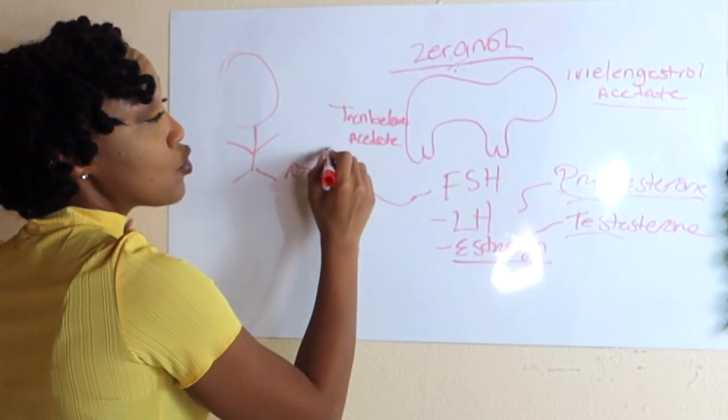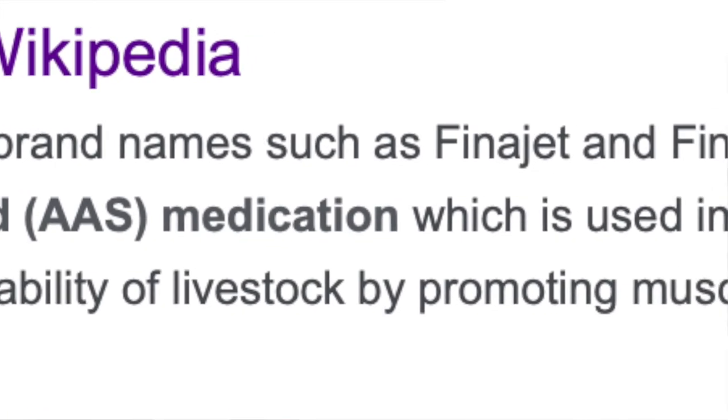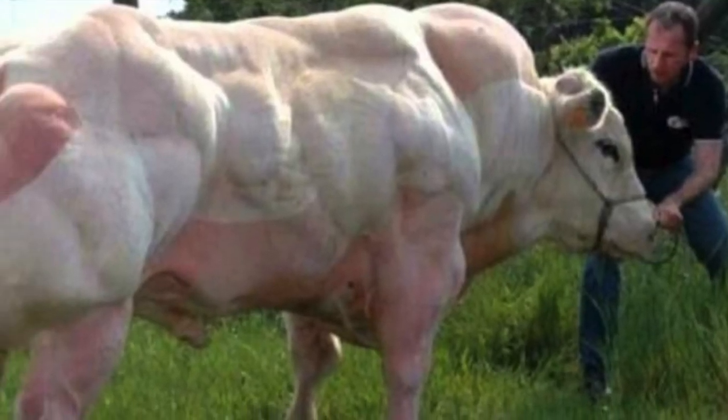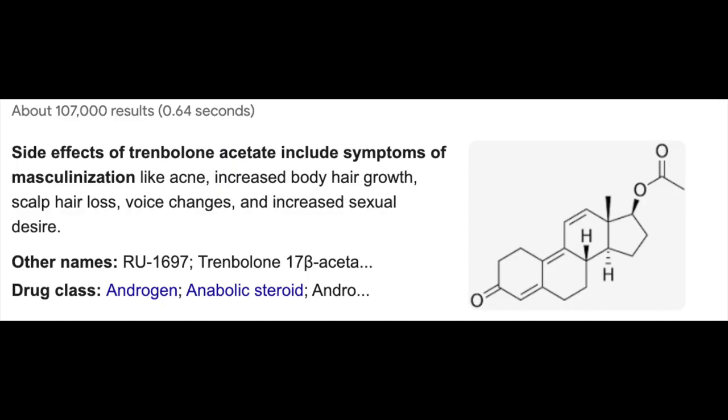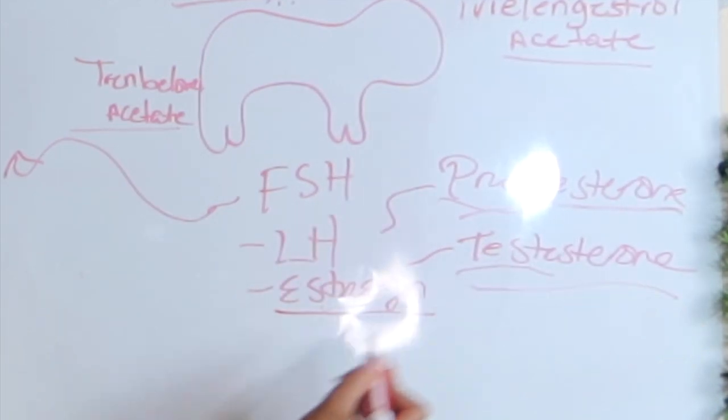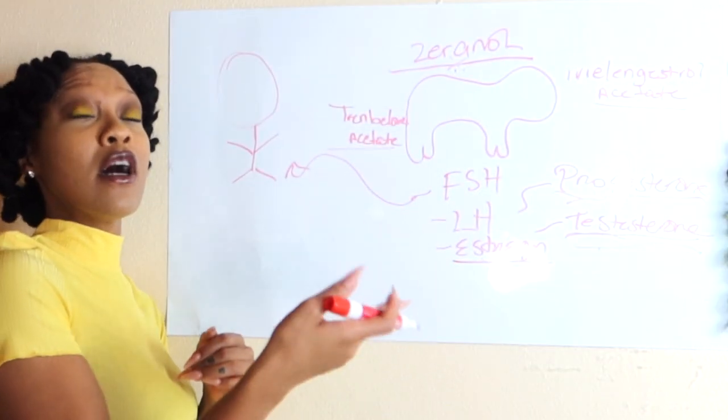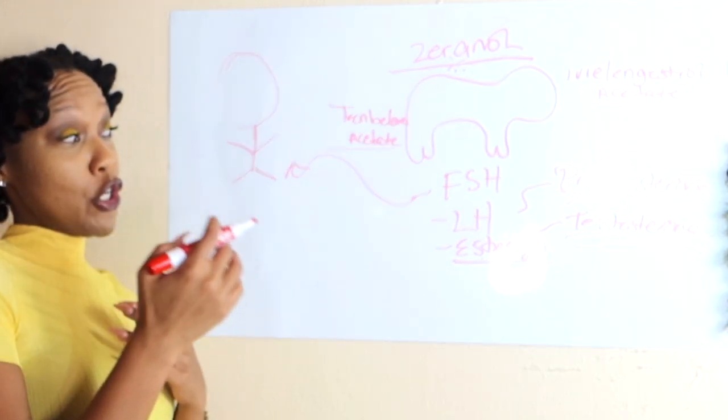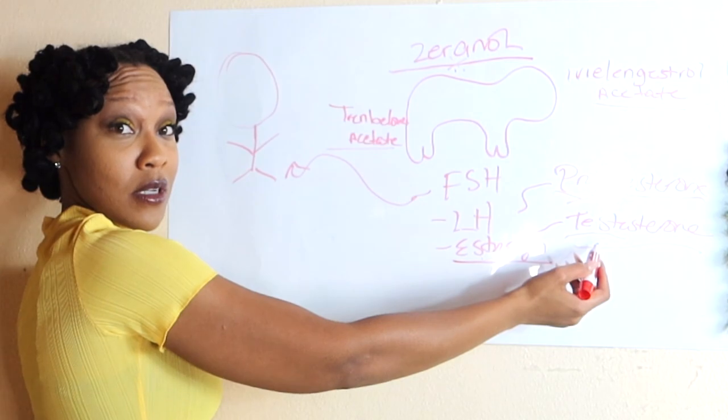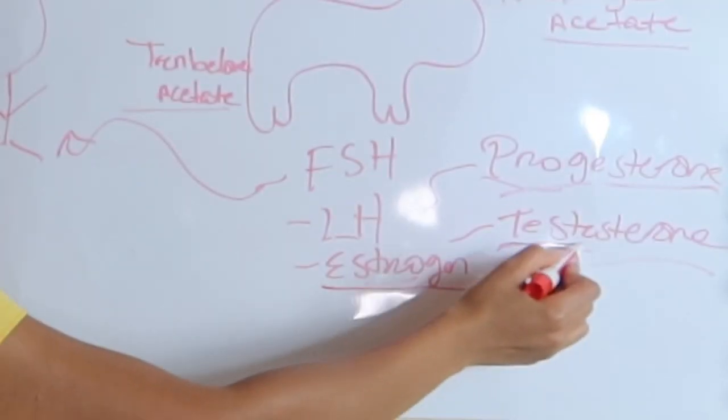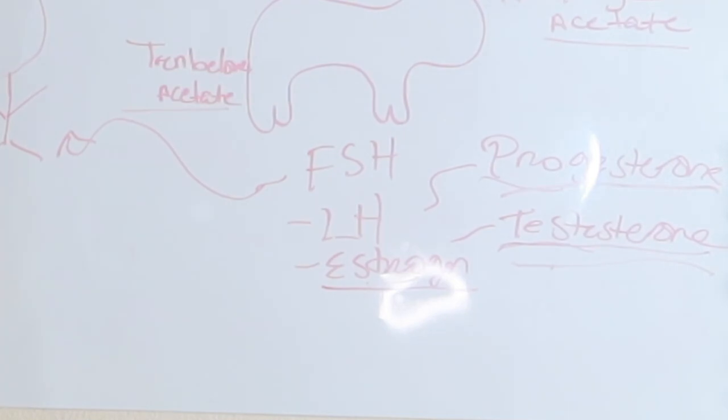Now let's get into Trenbolone acetate. This is what gives muscles to the cow. The side effects of Trenbolone acetate include symptoms of masculinization like acne, increased body hair growth, scalp hair loss, voice changes, and increased sexual desires. So this hormone mimics testosterone. This is why a lot of you women have facial hair. Because you're consuming testosterone,